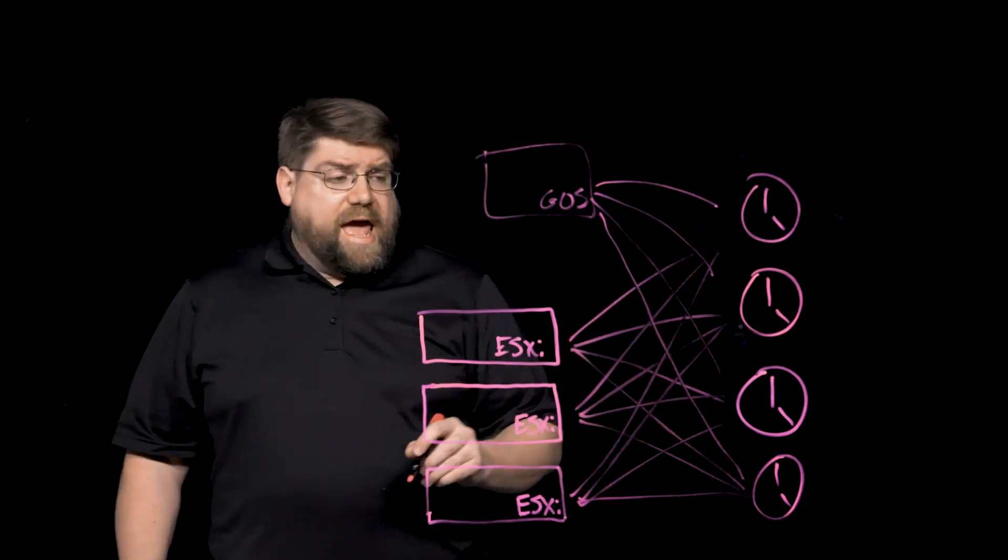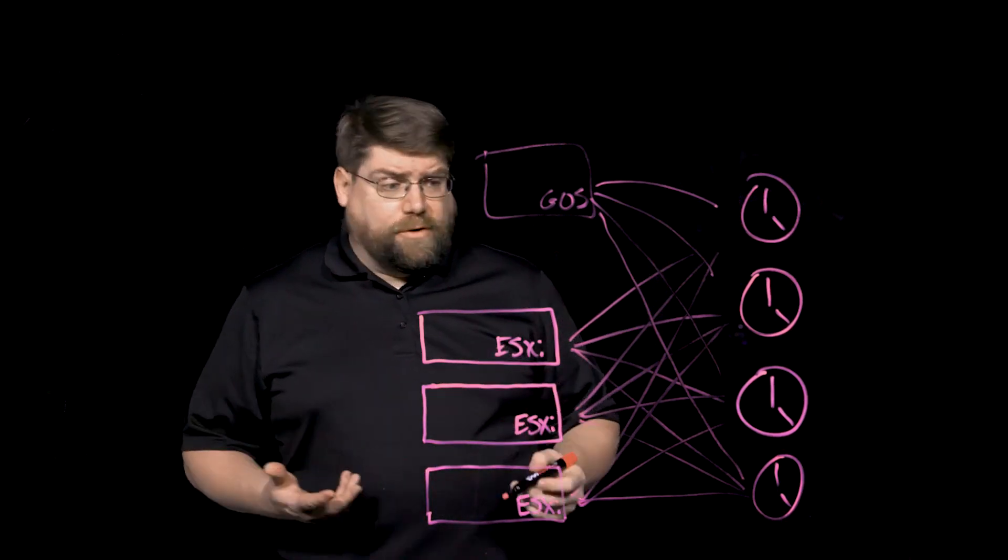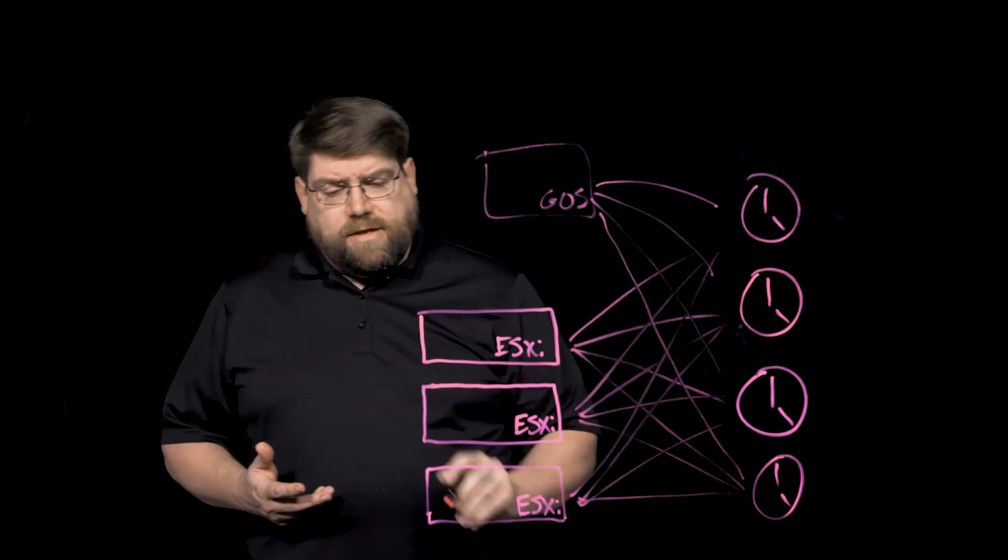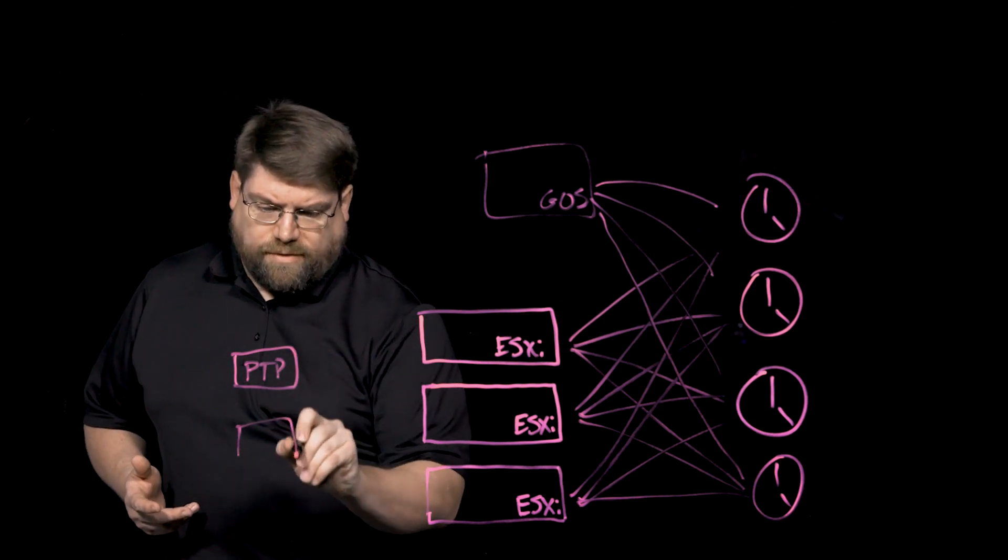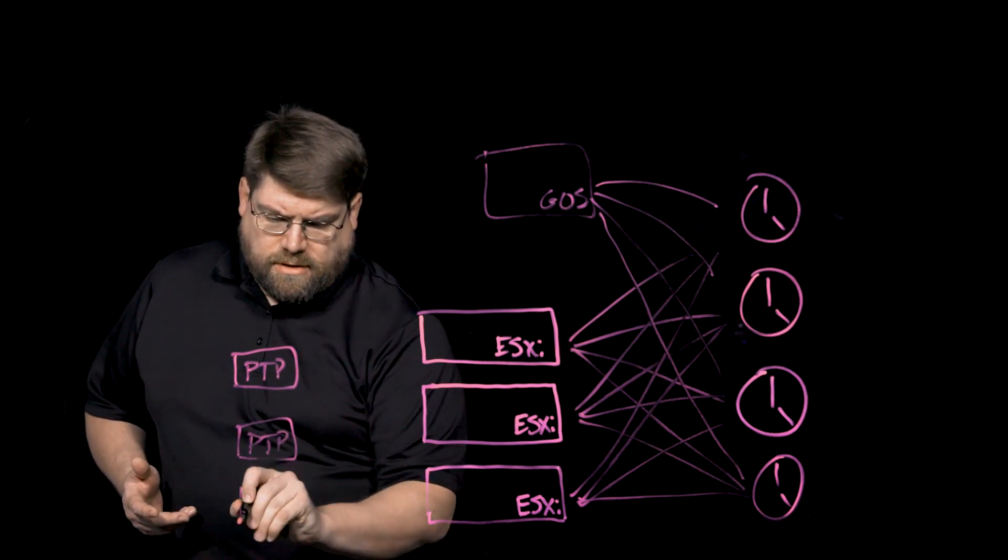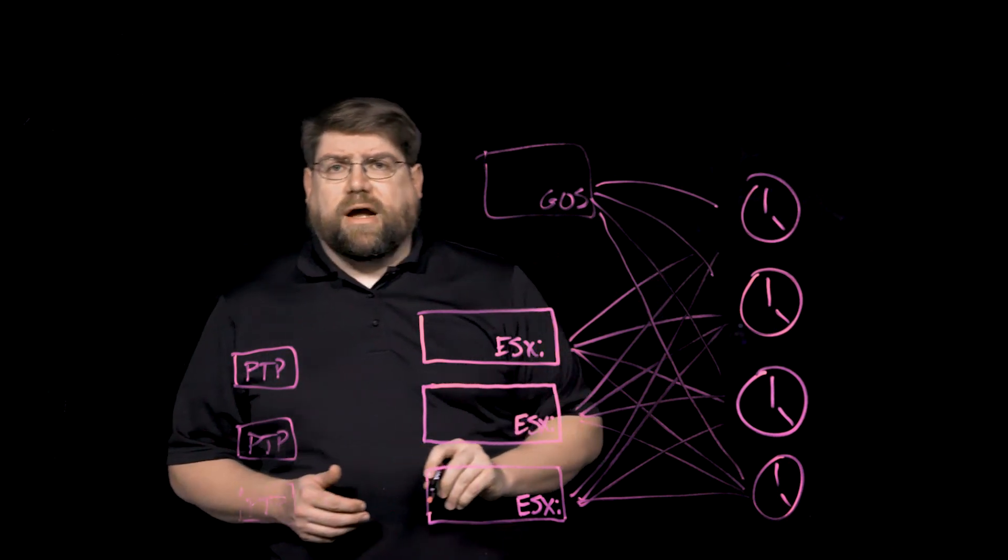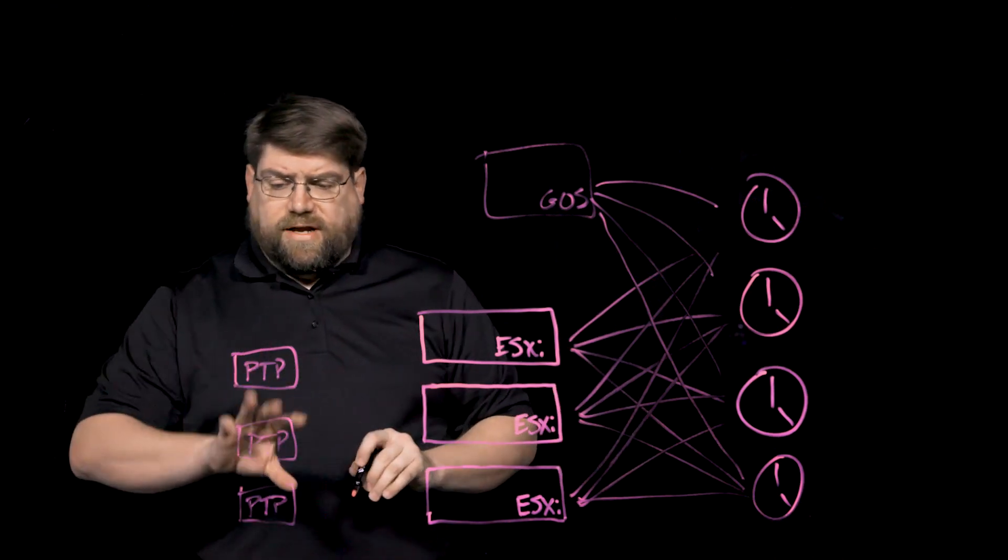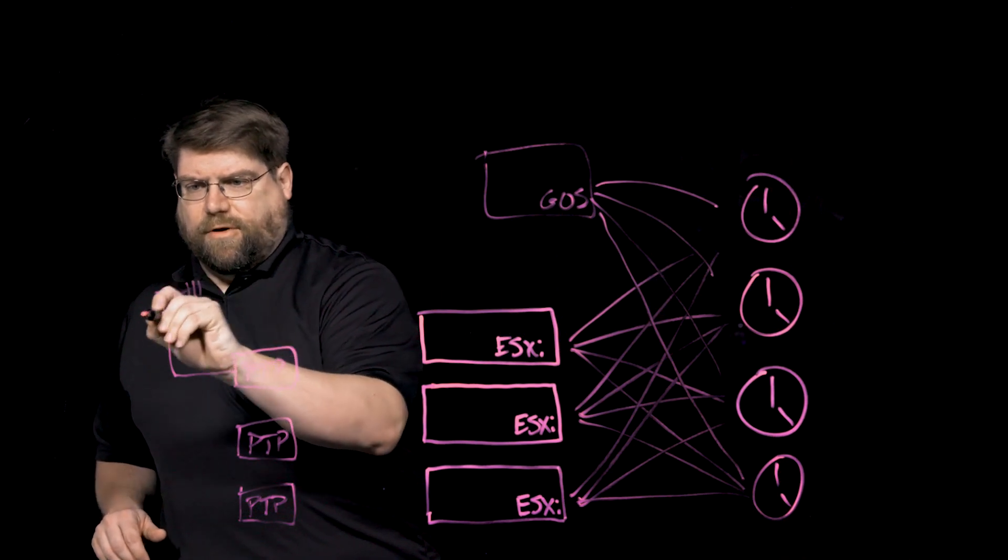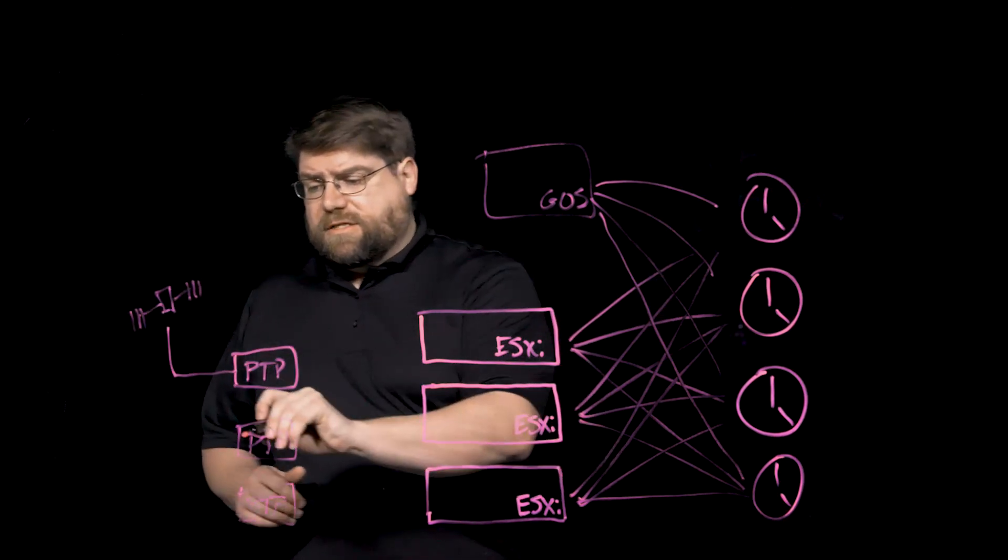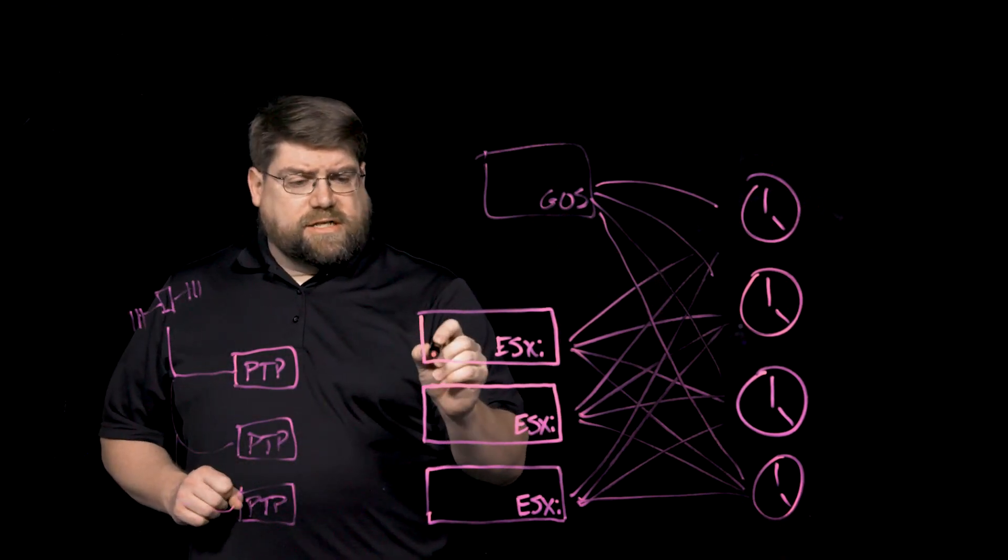vSphere 7 now adds the ability to do PTP or precision time protocol. That's a different protocol. We would turn off NTP and we would have PTP devices on our network, hopefully more than one of them, just in case. PTP is a relatively new protocol and it's being worked on by industry standard bodies. Our PTP devices will usually sync with satellites. Those are often a GPS sync there and they'll hang out on the same networks as ESXi.